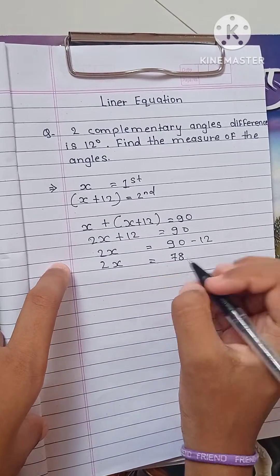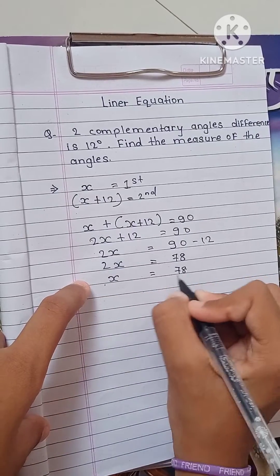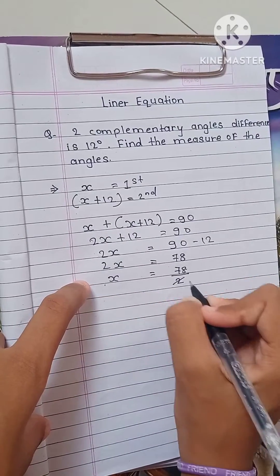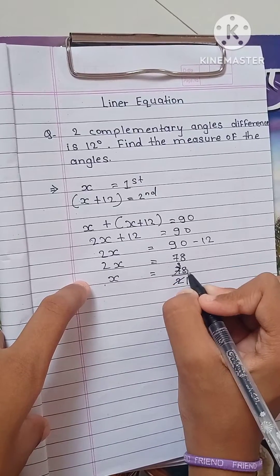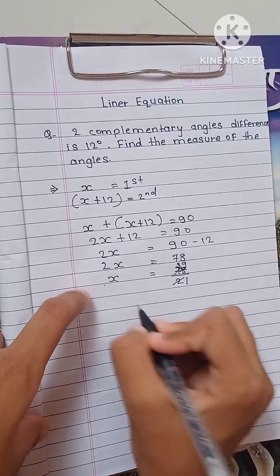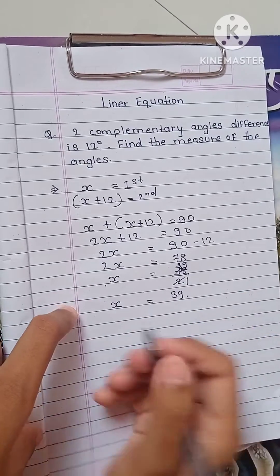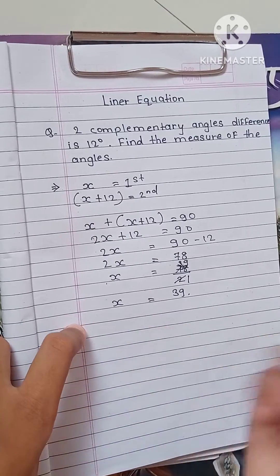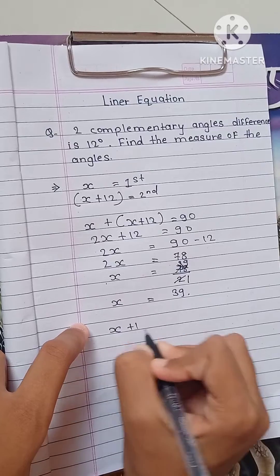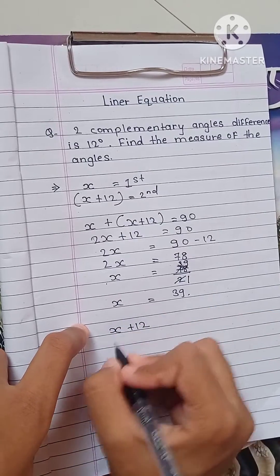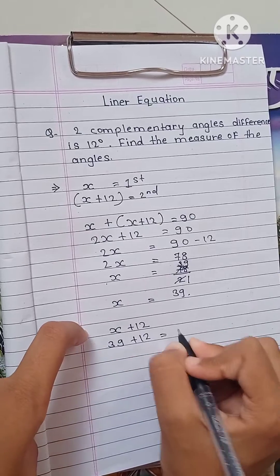So 2x is equal to 90 minus 12, which gives 2x is equal to 78. Then x is equal to 78 divided by 2. Working that out: 2 ones are 2, 2 threes are 6, 2 nines are 18 — so x is equal to 39.